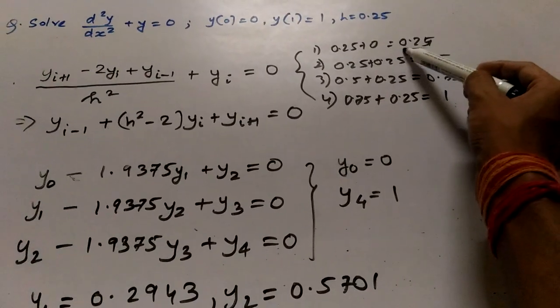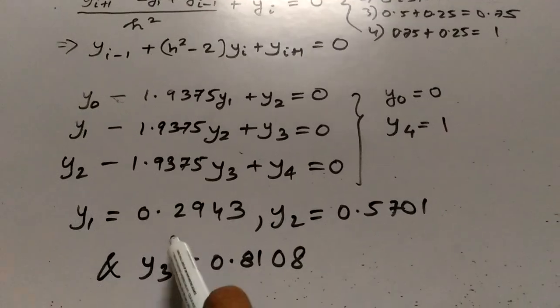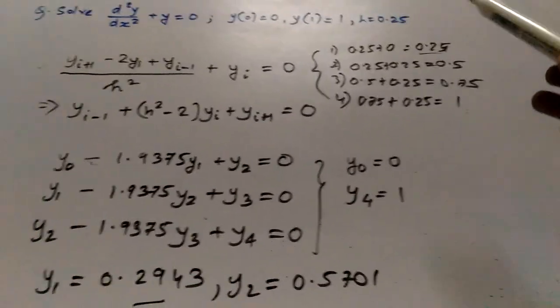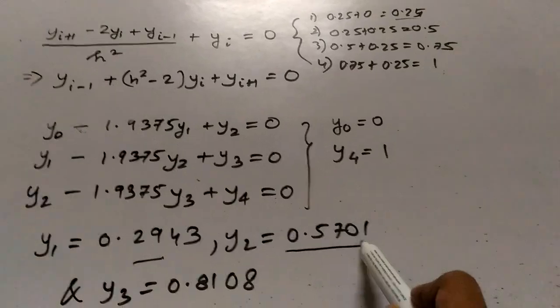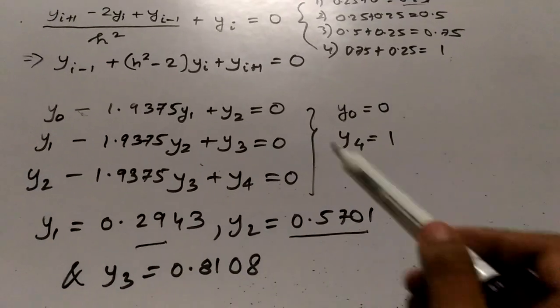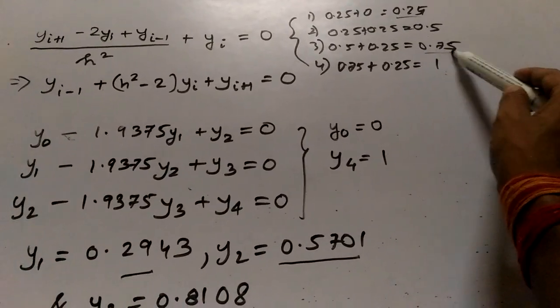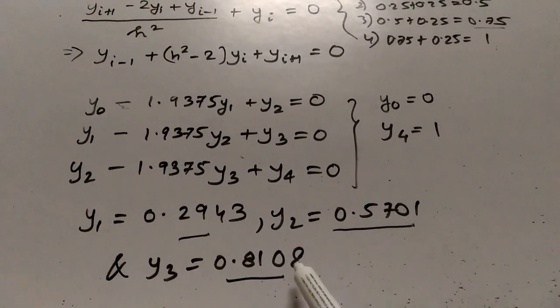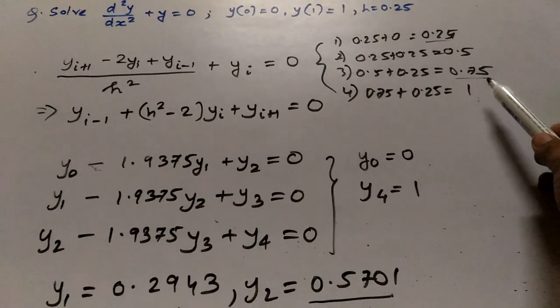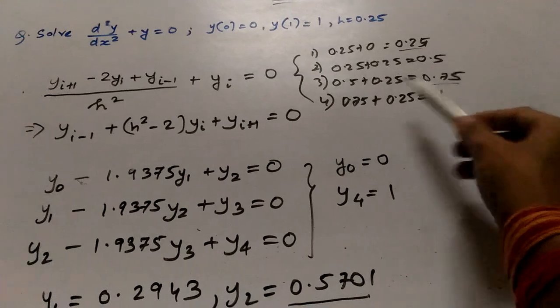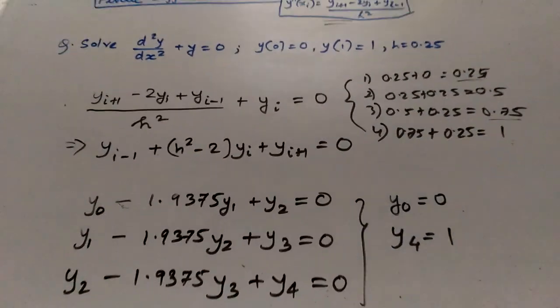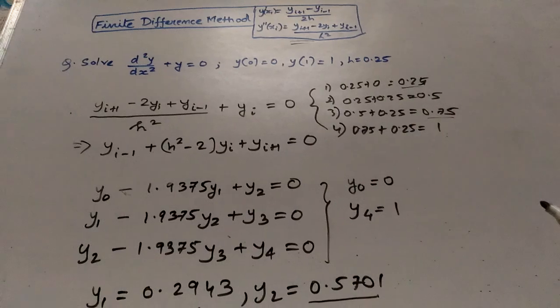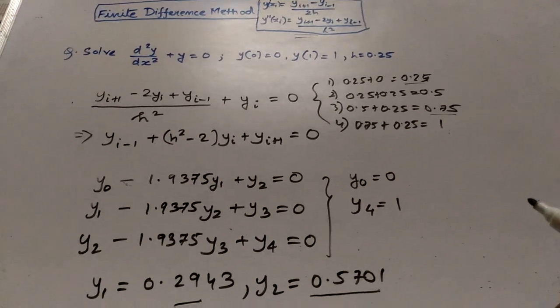The value of y at x equals 0.25 is 0.2943, the value of y at x equals 0.5 is 0.5701, the value of y at x equals 0.75 is 0.8108, and we know the value of y at x equals 1 is 1. So this was how we can solve differential equations using the finite difference method. Thank you.